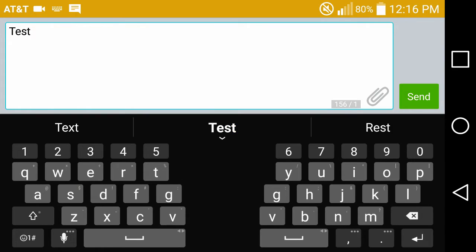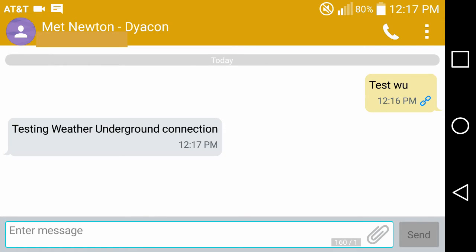Rather than waiting for the weather station to report to weather underground, we can force a test report. This is done by sending test WU. The weather station responds, and the user can check the weather underground interface to make sure that data is being sent.